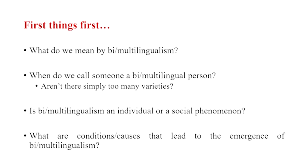What are the questions that we can ask when talking about bilingualism? We can talk about what do we exactly mean by bi- or multilingualism. What does it mean when I say that Ram is a bilingual or Shyam is a multilingual? What do these tags entail? And — is there only one kind of a bilingual or multilingual? Aren't there simply too many varieties?